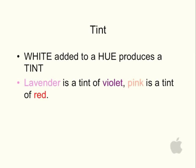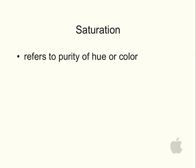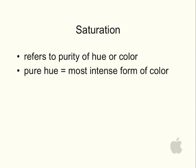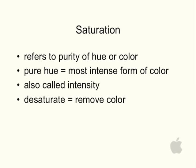Pink is a tint of red — you take red, add white, and it creates pink. Saturation refers to the purity of a hue or color. A pure hue is in its most intense form of color. Often you hear people refer to saturation as intensity. You can desaturate a hue or color by removing its color — to desaturate means to remove the color.